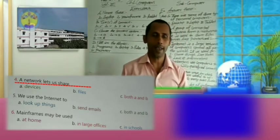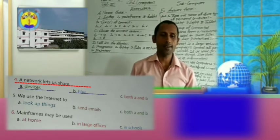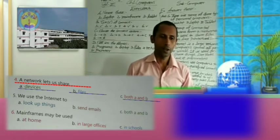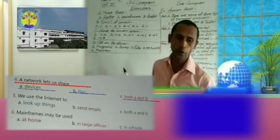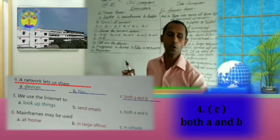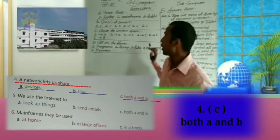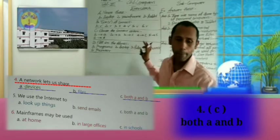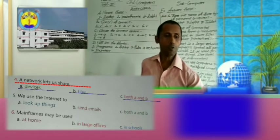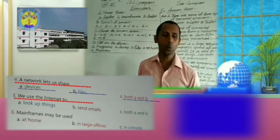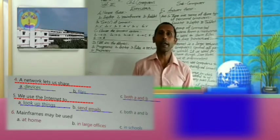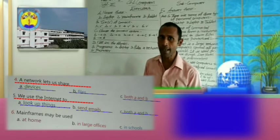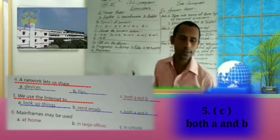Now, on a network we can share — options are devices, files, or both A and B. Think and give the answer. Yes, you are right. Both A and B. Now, number five: we use the internet to — look up information, send emails, or both A and B? Think and give the answer. Yes, you are right. Both A and B is the correct answer.